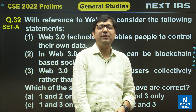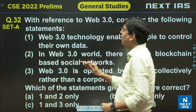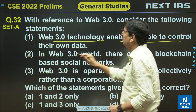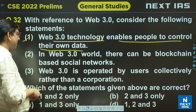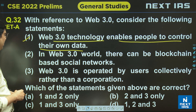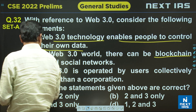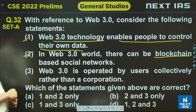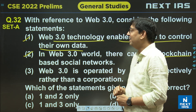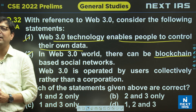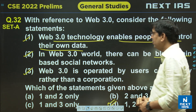Question 32 is about Web 3.0. Statement one: Web 3.0 technology enables people to control their own data — this refers to decentralization, so it's true. Statement two: Web 3.0 world can have blockchain-based social networks — true. Statement three: Web 3.0 is operated by users collectively rather than corporations — decentralization means people control it rather than corporations, so this is also true. Answer for question 32 is D, meaning all three statements are correct.